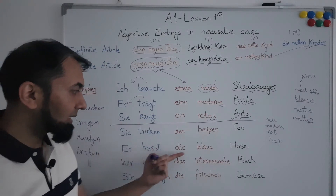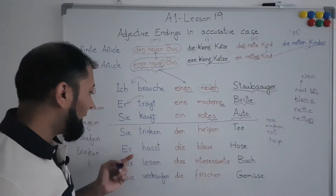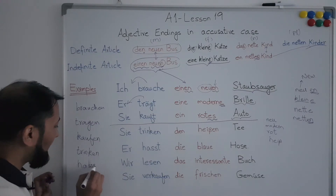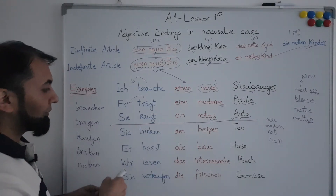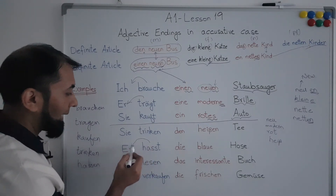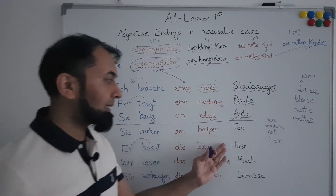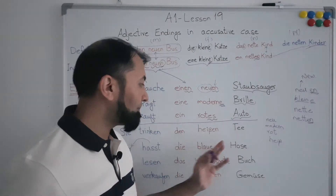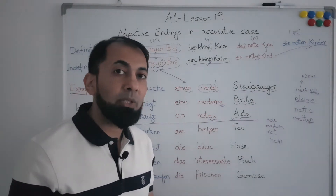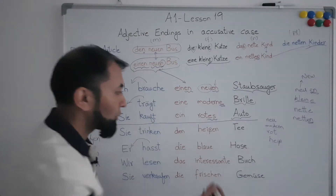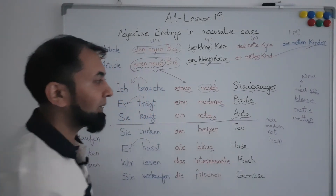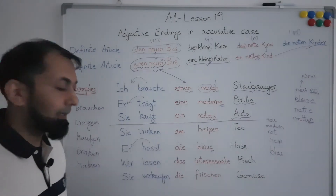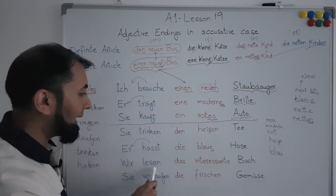Next example: 'Er hasst die blaue Hose' — he hates the blue trousers. 'Hassen' means 'to hate'; conjugated with 'er' it becomes 'hasst'. The noun 'Hose' is a feminine noun with article 'die'. For a feminine noun in the accusative case with a definite article, we add '-e' at the end of the adjective. So 'blau' becomes 'blaue'. Again, a color is being used as an adjective.